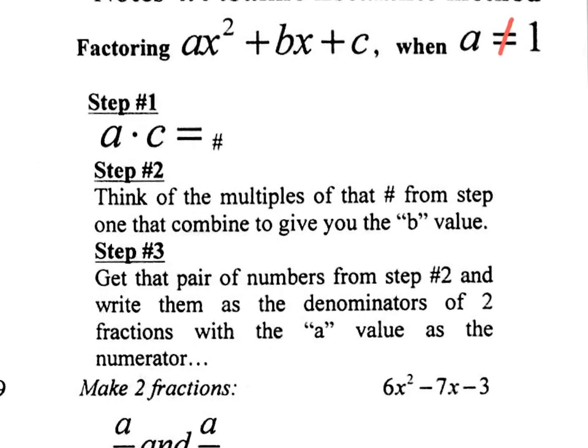Step 1 is to multiply A times C. A is this number, C is this number, so you just multiply those guys together and you get an answer for step 1. Step 2, it says think of the multiples of that number from step 1 that combine to give you the B value, which is up here.